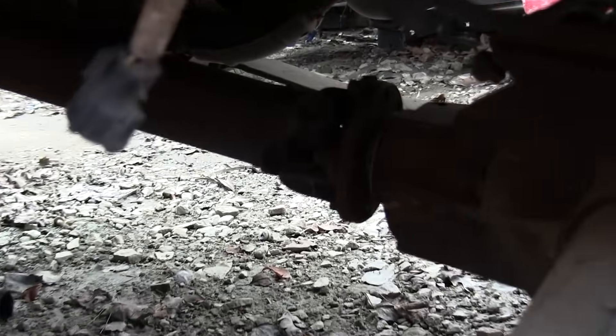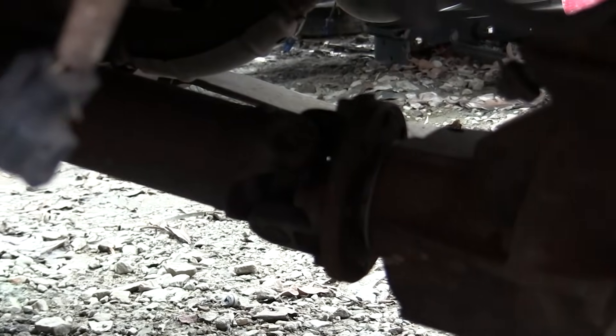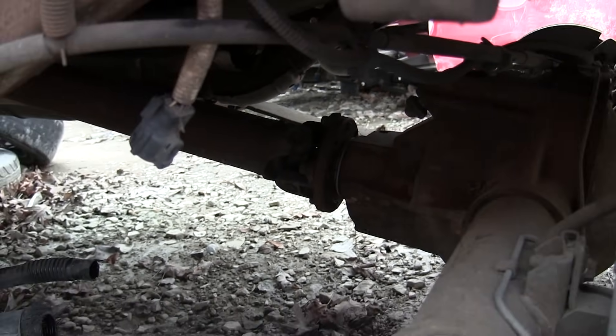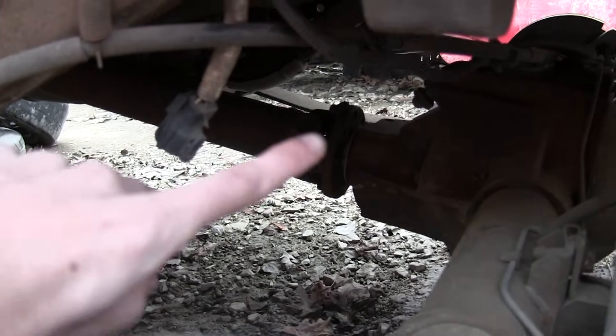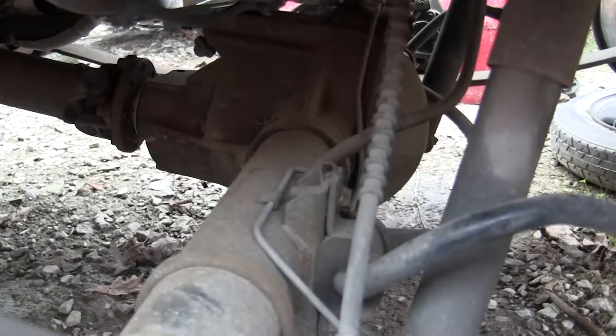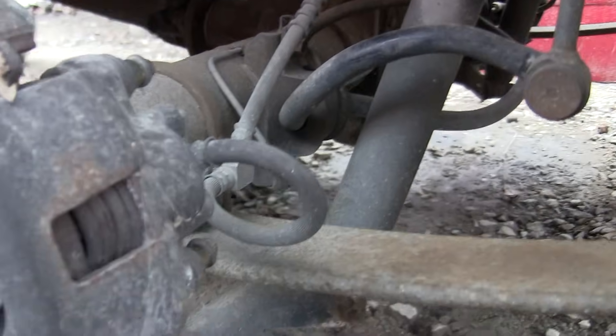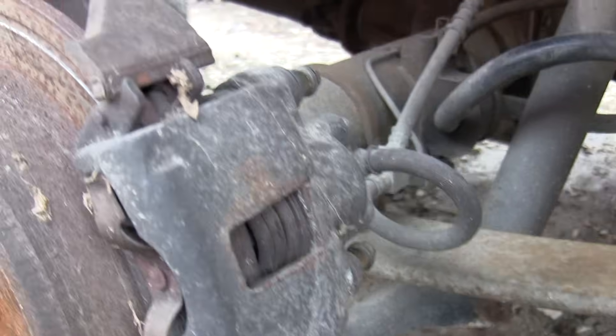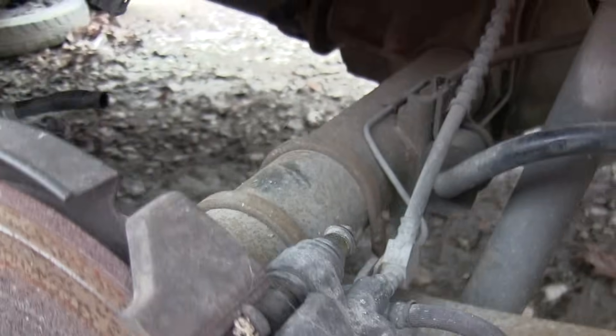Here we've got a solid rear axle, just a solid axle type of suspension. You've got the drive shaft coming in there, going to your differential, and then both wheels connected to this differential via a solid axle.